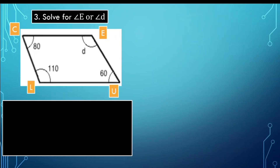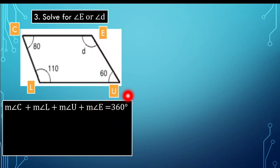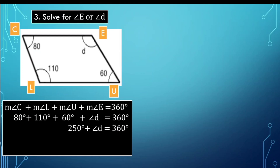Now let's proceed to number 3: solve for angle E, also named angle D. We have quadrilateral C, L, U, E — or quadrilateral CLUE. We'll apply the formula: the measure of angle C plus the measure of angle L plus the measure of angle U plus the measure of angle E is equal to 360 degrees. Substituting gives 250 plus angle D equals 360 degrees. Transferring 250 to the other side gives 110 degrees. So the measure of angle D is 110 degrees.